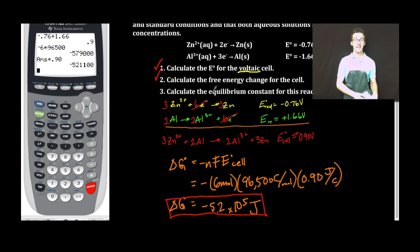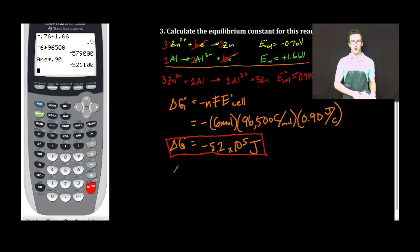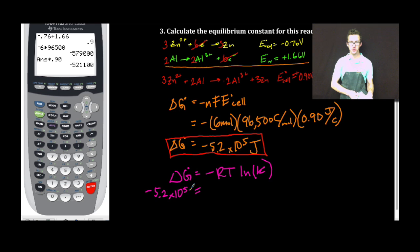Finally, calculate the equilibrium constant for this reaction. Remember delta G is related to the equilibrium constant using this equation. I know the value for delta G is negative 5.2 times 10 to the 5 joules. That's equal to negative times my R constant of 8.314 joules per mole Kelvin.